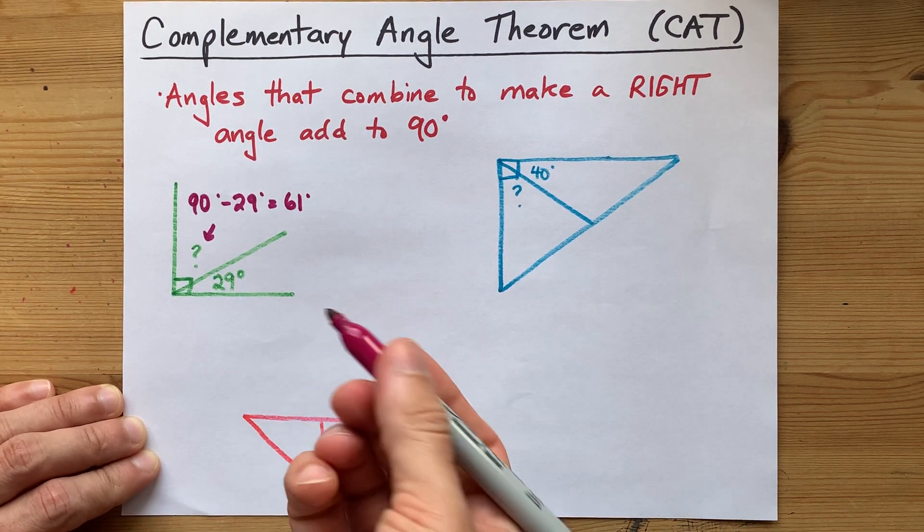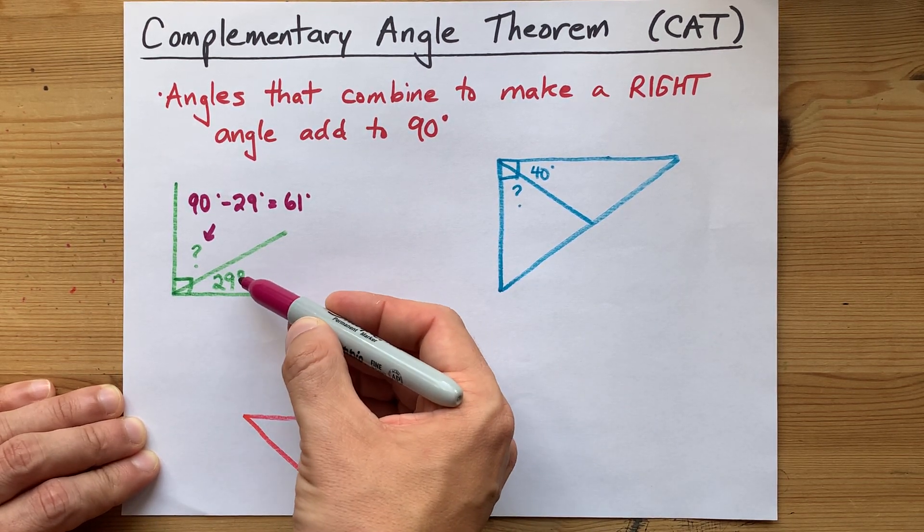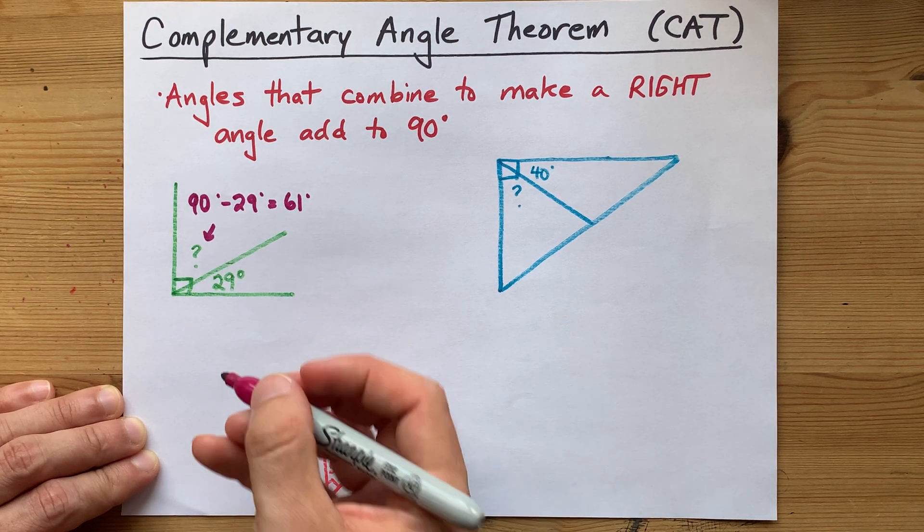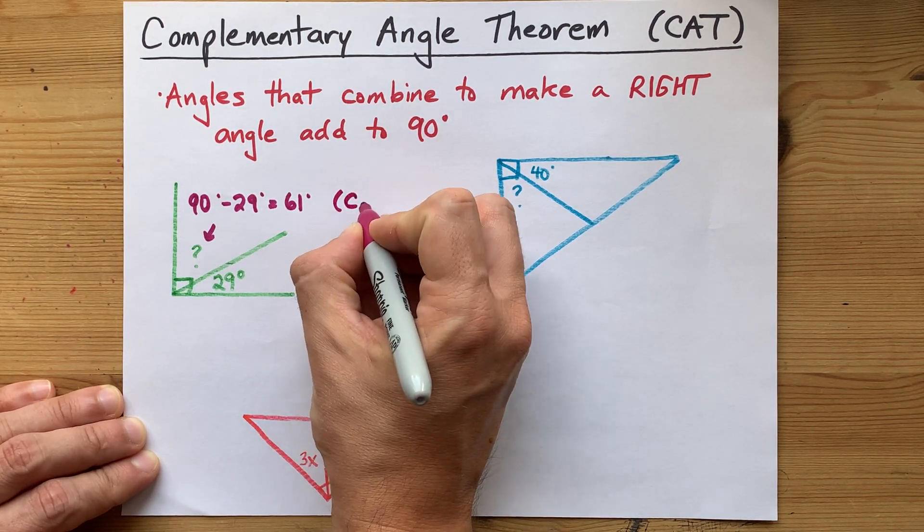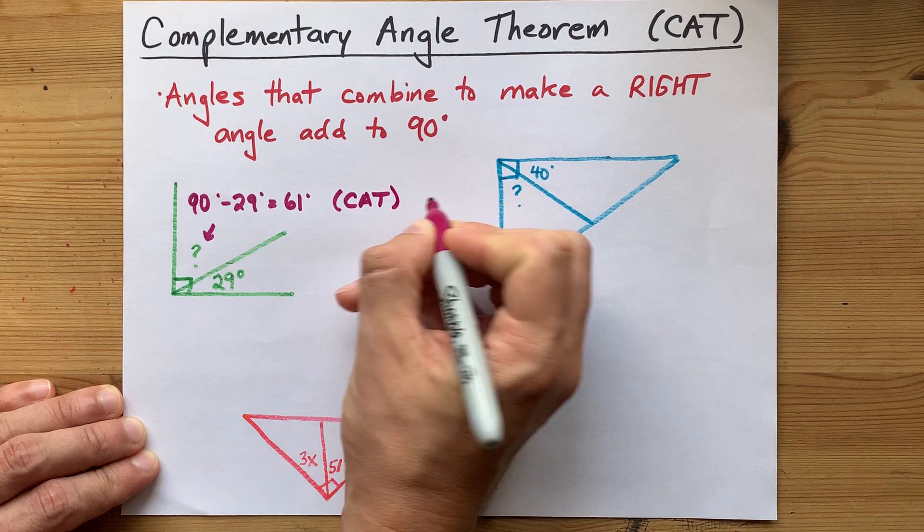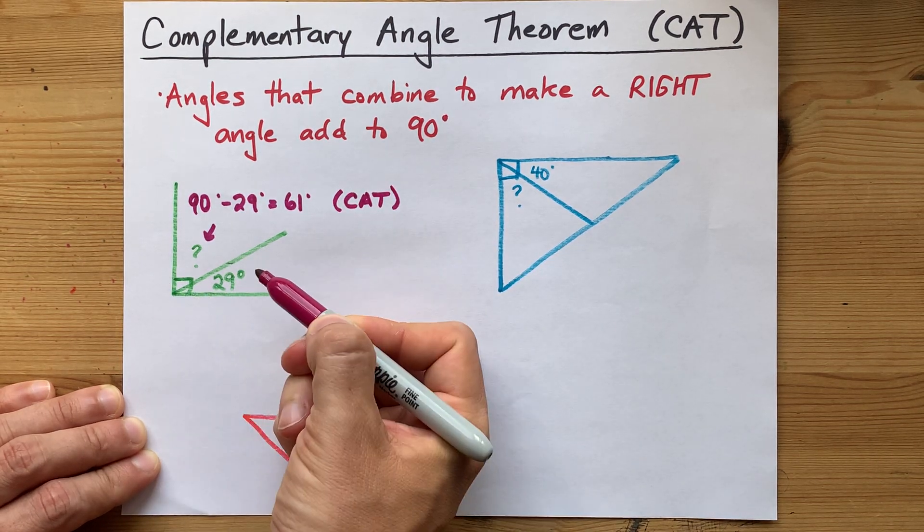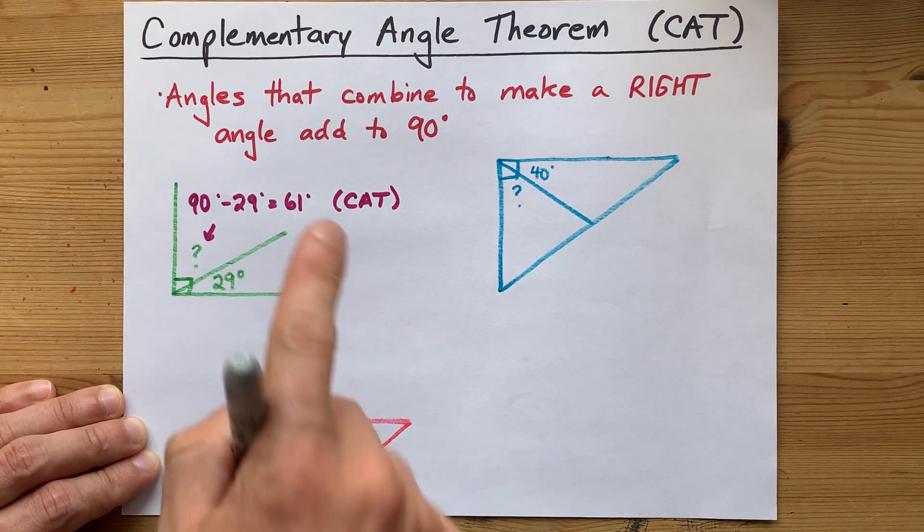Does that look like a 61 degree angle? Yeah, sure, especially if this is 29, because that's definitely bigger. But don't forget to cite your sources. CAT, you know that if they added to a right angle, they added to 90. Beautiful.